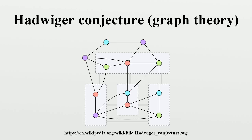Contracting the edges within each of these subgraphs so that each subgraph collapses to a single vertex produces a complete graph K_K on K vertices as a minor of G. This conjecture, a far-reaching generalization of the four-color problem, was made by Hugo Hadwiger in 1943 and is still unsolved.